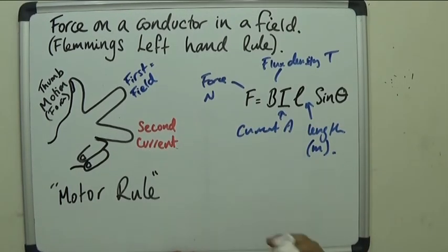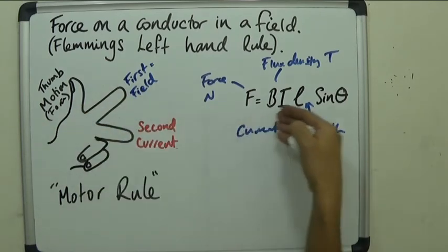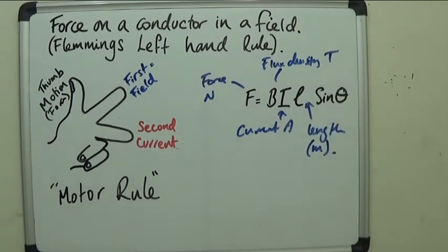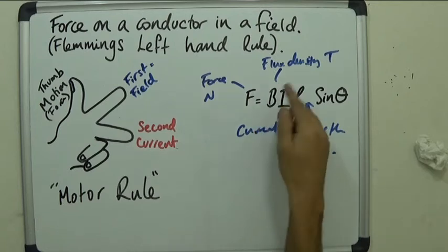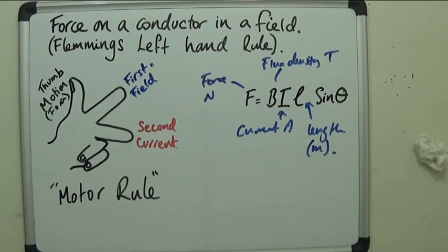Now, what links these various components is the equation here, force equals BIL. So, the B is the flux density, I of course the current, and L is the length of the conductor that is inside the magnetic field.